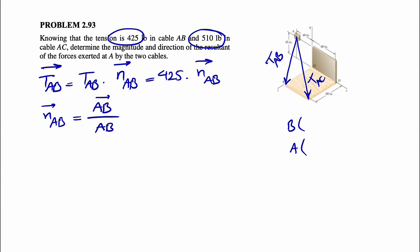Point B is on the Z-axis, so there is no X or Y component for it. The Z component is 60 inches. Point A is in the XY plane, meaning no Z component. The X component is on the negative side, so it's minus 40 inches, and the Y component is 45 inches.